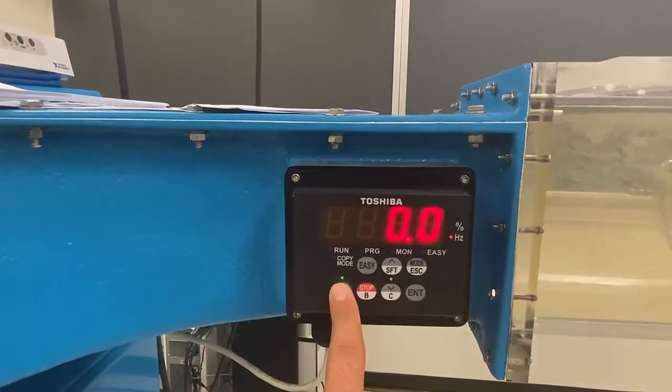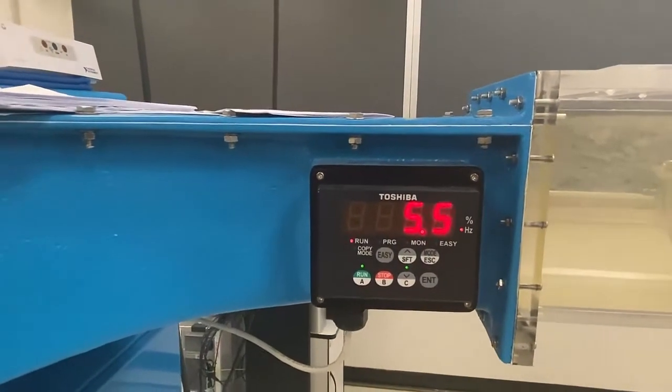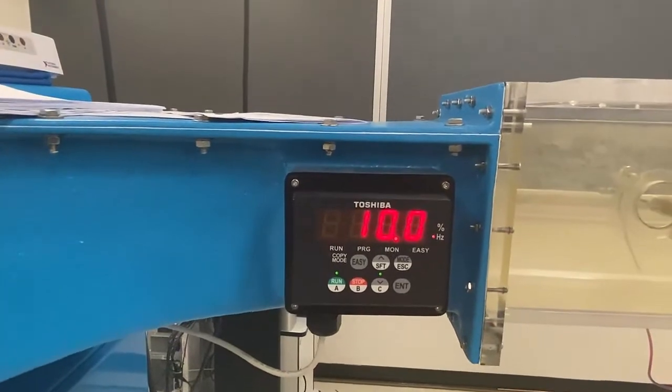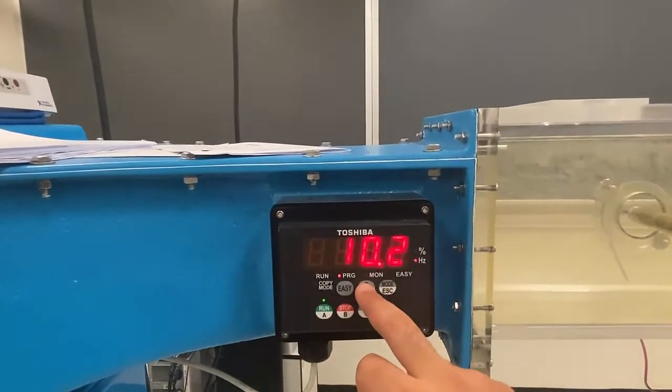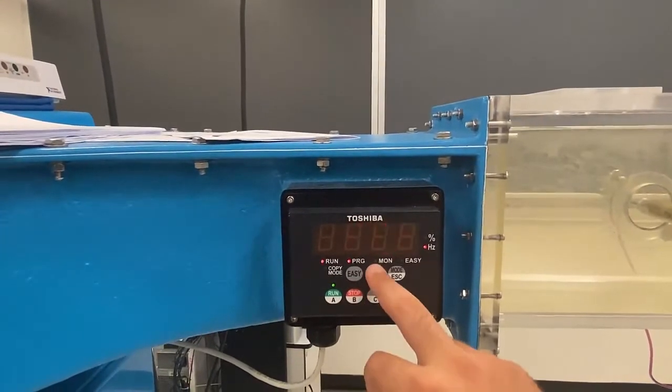If you are running the tunnel and you want to change the speed, we'll hit run again. It'll go back up to 10. You simply just have to change the value by using the up-down arrows here.